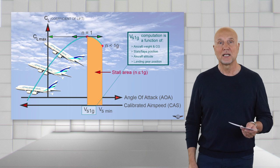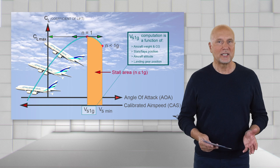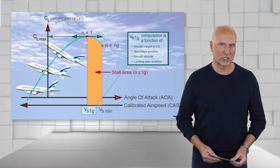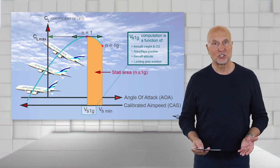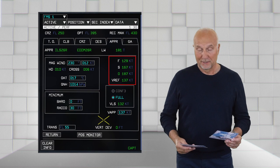VS 1G is not displayed in the cockpit. The value is calculated by the prims and is a function of aircraft weight and center of gravity, aircraft altitude, slats flaps position, and landing gear position. VS 1G is also calculated by the FMS for performance predictions and characteristic speeds presented on the MFD.